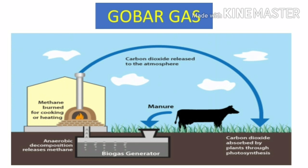From this generator, methane gas is released. This methane is burned for cooking or heating. When methane burns, carbon dioxide is released into the atmosphere, and this carbon dioxide is absorbed by plants through photosynthesis. In this way, gobar gas is very useful.